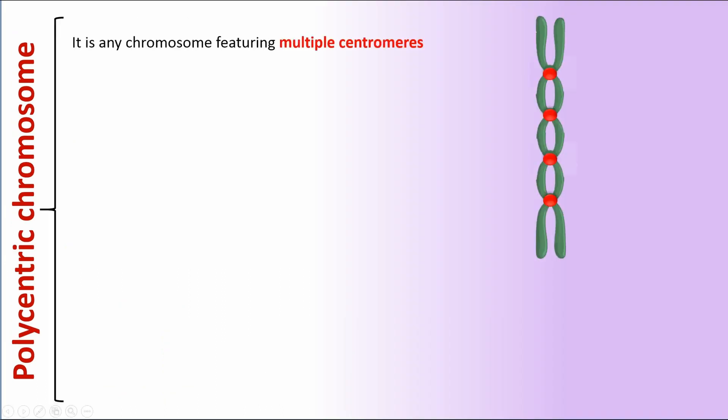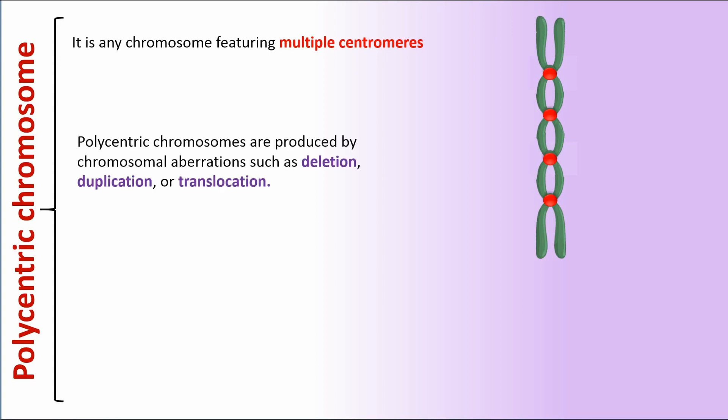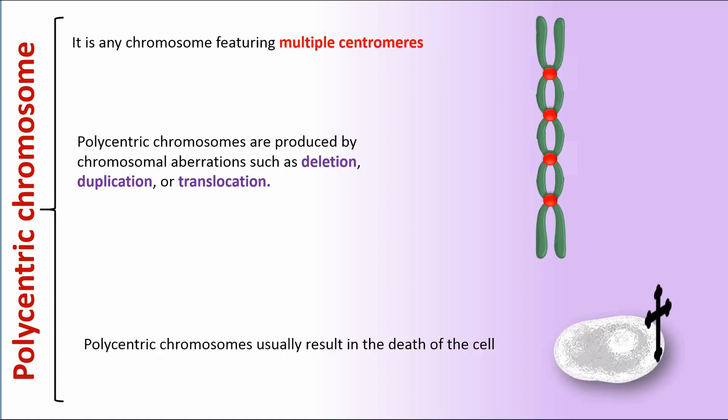A polycentric chromosome is any chromosome featuring multiple centromeres. Polycentric chromosomes are produced by chromosomal aberrations such as deletion, duplication, or translocation. Polycentric chromosomes usually result in the death of the cell.